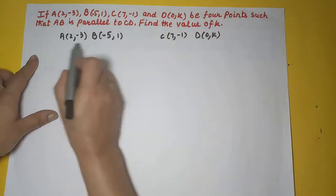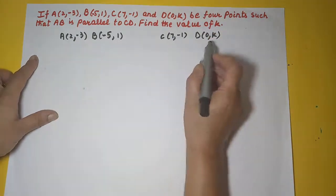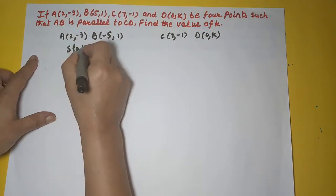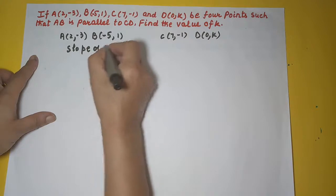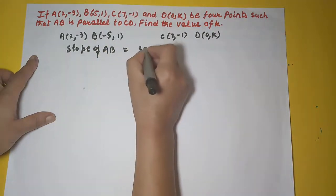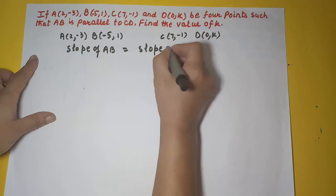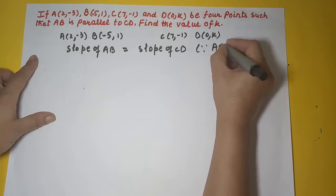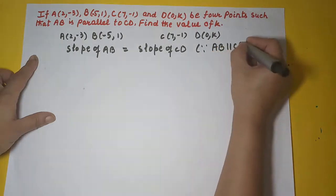So it is given that AB is parallel to CD. Does that mean slope of AB is equal to slope of CD? Yes, the reason is because AB is parallel to CD.